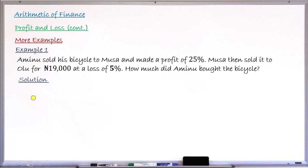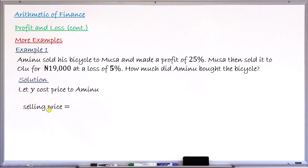For the solution, we let Y be the cost price as far as Aminu is concerned — that is the original price of the bicycle, since all percentages are based on this initial cost price. If Y is the cost price, the selling price is Y plus 25% of Y, which simplifies to 125Y over 100, or 5Y over 4. This is the selling price for Aminu, and it is the same as the cost price for Musa.